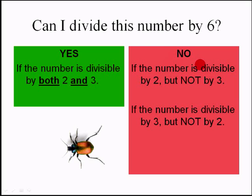If the number is divisible by 2 but not by 3, or if the number is divisible by 3 but not by 2, then the number is not divisible by 6.